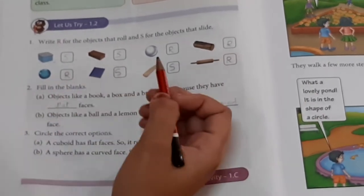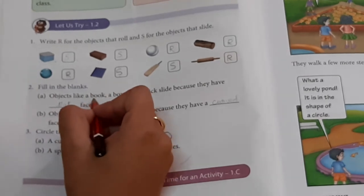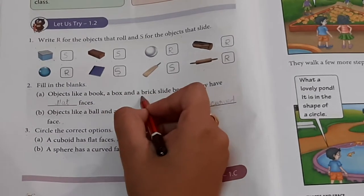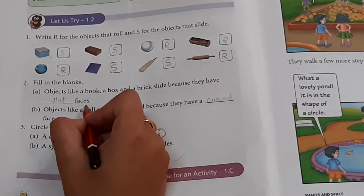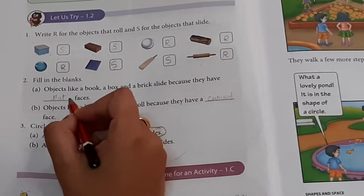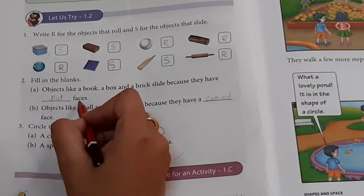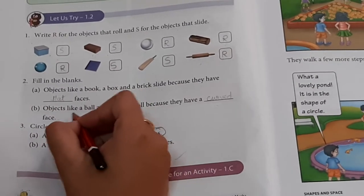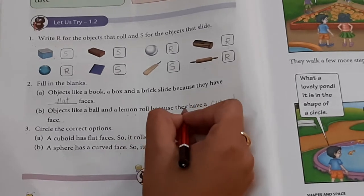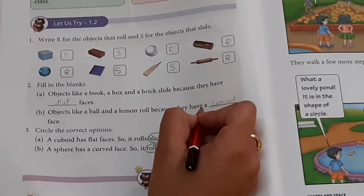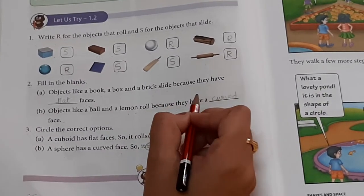Second question. Fill in the blanks. Objects like a book, a box and a brick slide because they have flat faces. Objects like a ball and a lemon roll because they have a curved face.